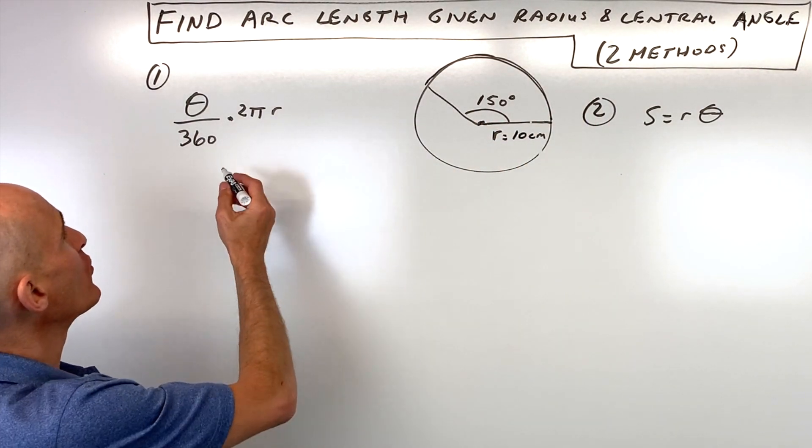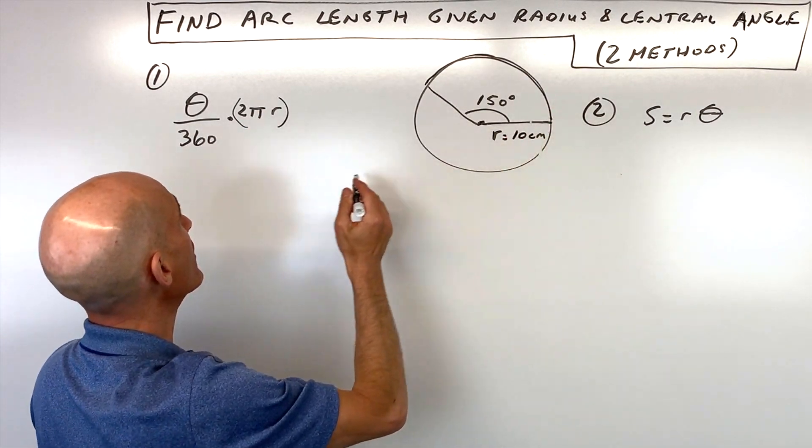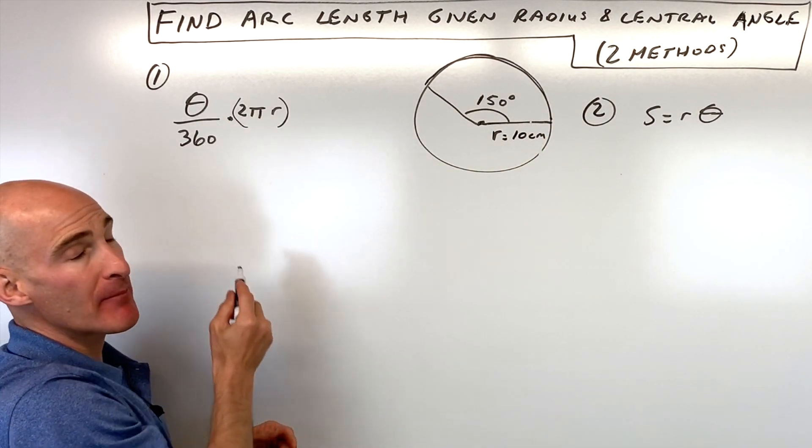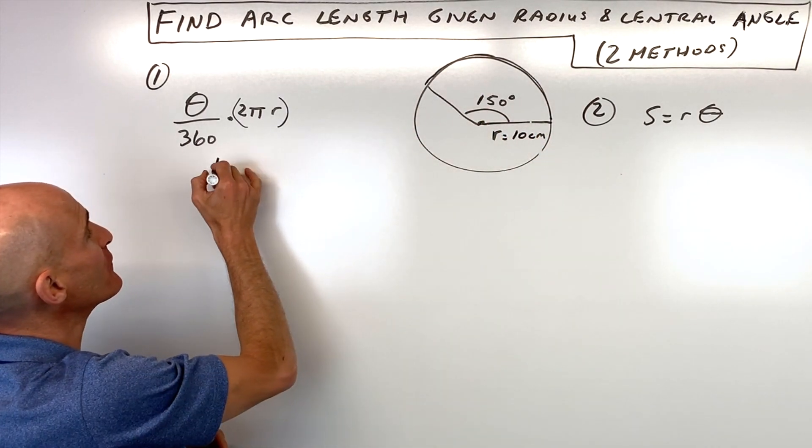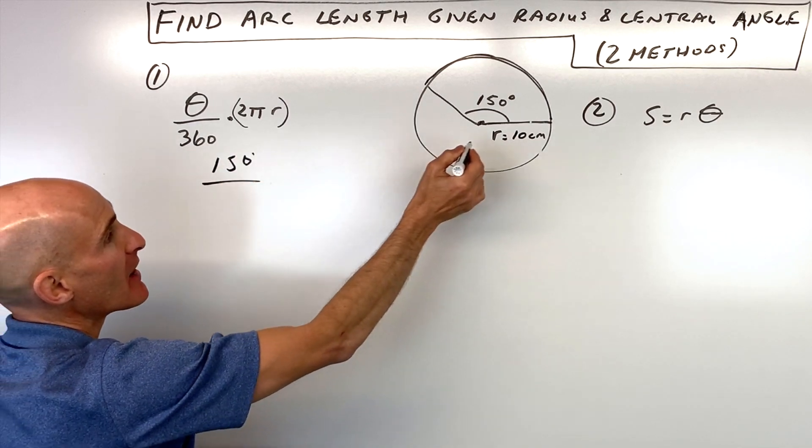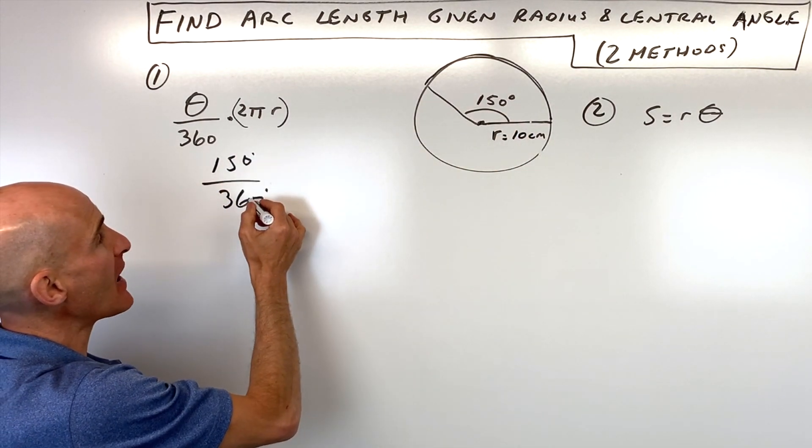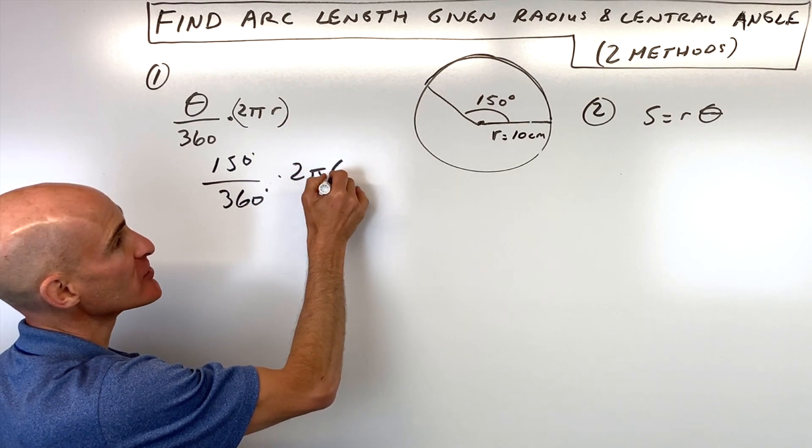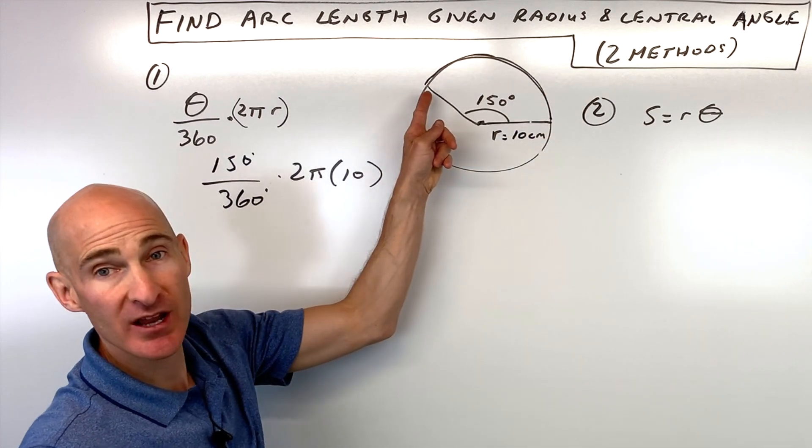The first formula uses the circumference, which is 2πr, multiplied by the fraction of the whole circumference. That fraction is 150 degrees divided by 360 degrees. So that fraction times the circumference, which is 2π times 10 centimeters, gives you the arc length.